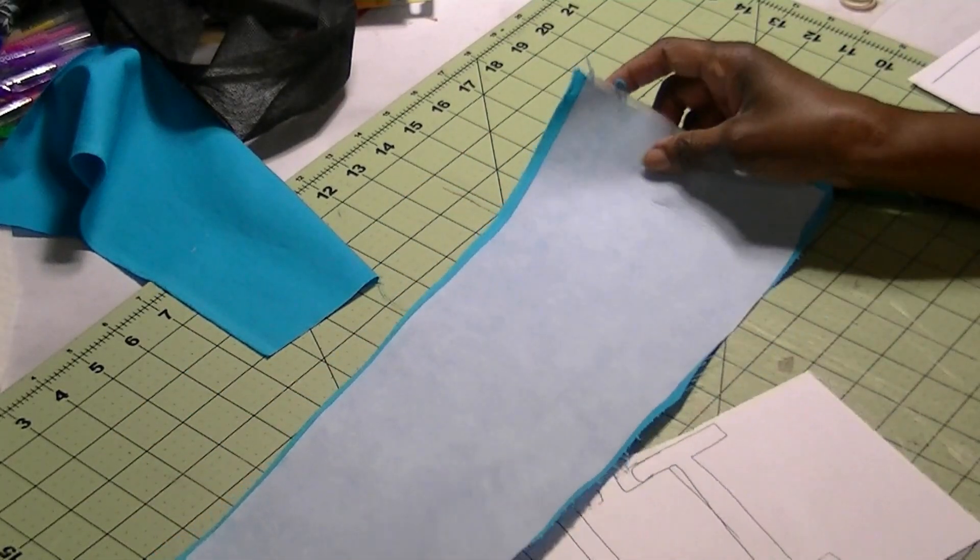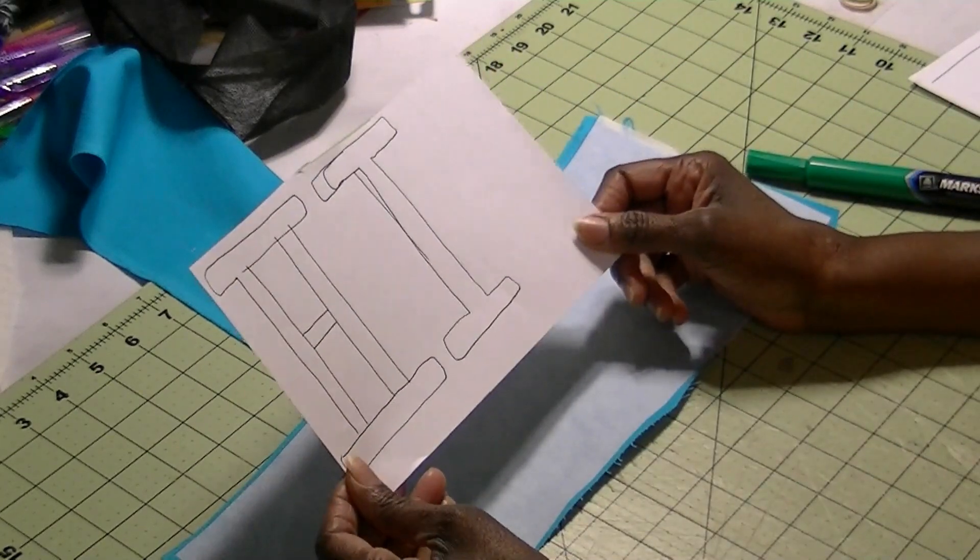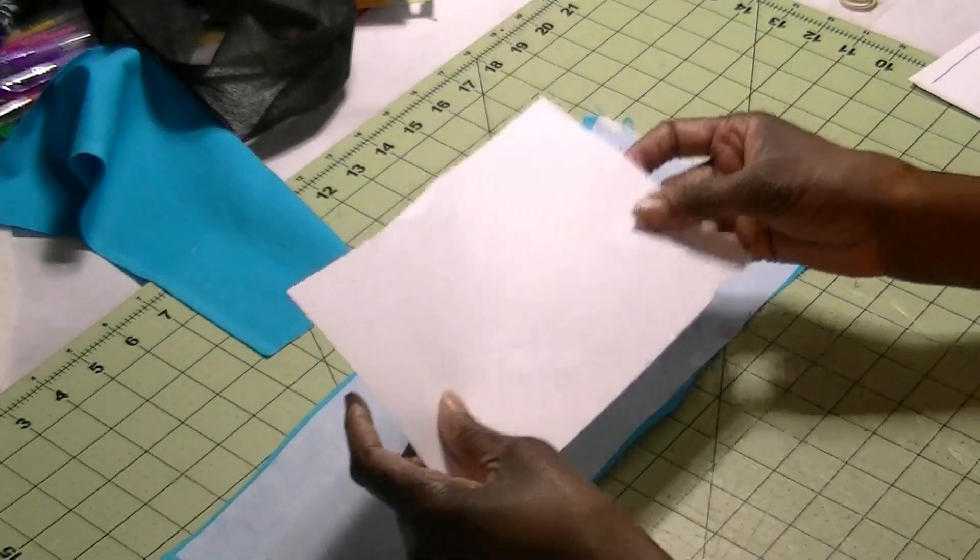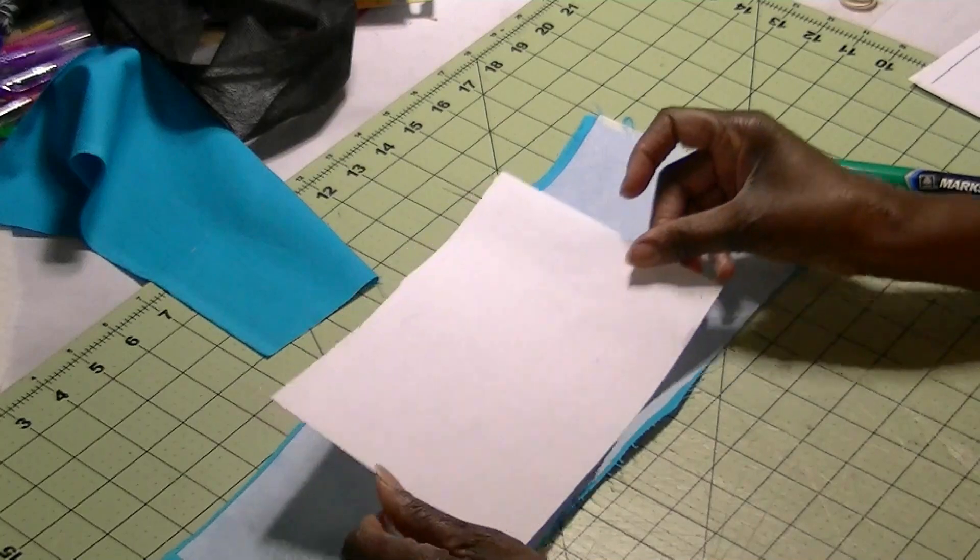You want to be working on the side where the paper is. So here are my letters and I'm going to turn them over. I can still see my letters on the wrong side.